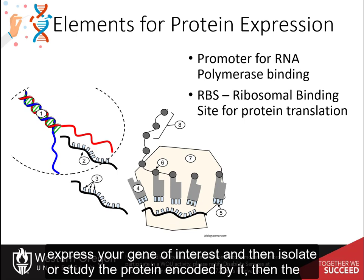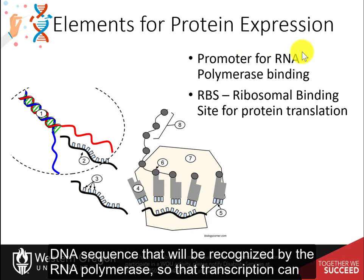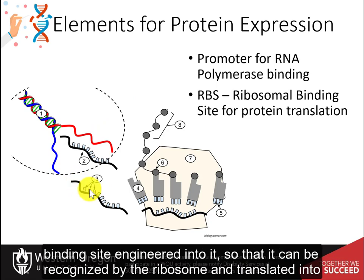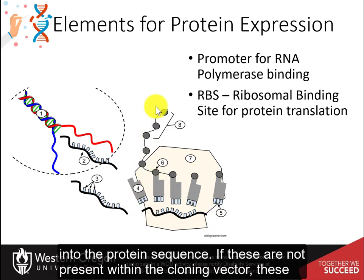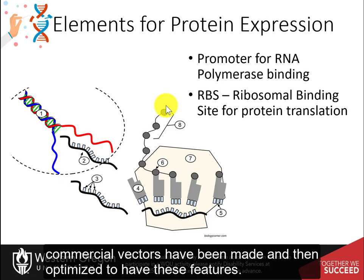If you want to express your gene of interest and then isolate or study the protein encoded by it, the vector needs to contain some expressional elements as well. It will need a promoter in the DNA sequence that will be recognized by the RNA polymerase so that transcription can occur, generating a messenger RNA molecule. The resulting messenger RNA must also have a ribosomal binding site engineered into it so that it can be recognized by the ribosome and translated into the protein sequence. If these are not present within the cloning vector, these sequences can often be engineered into the PCR primer sequence, although many commercial vectors have been made and optimized to have these features.